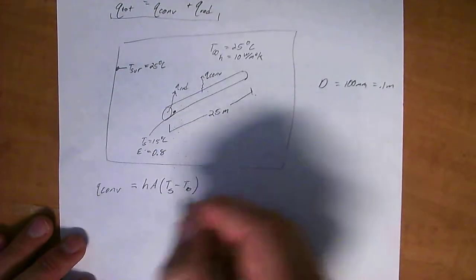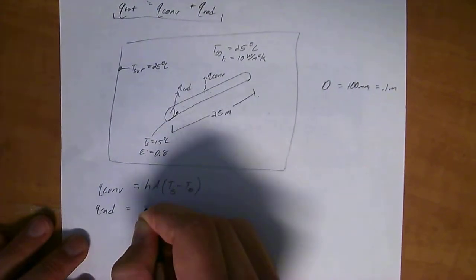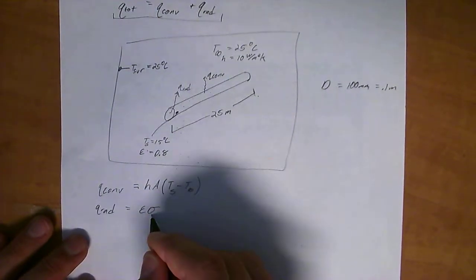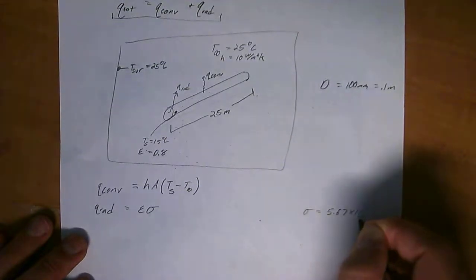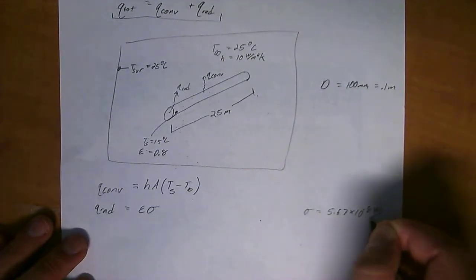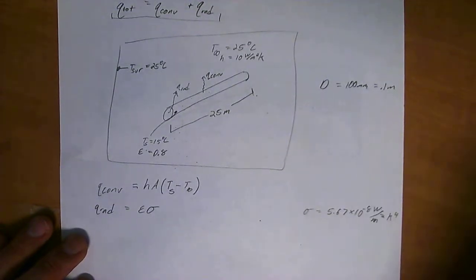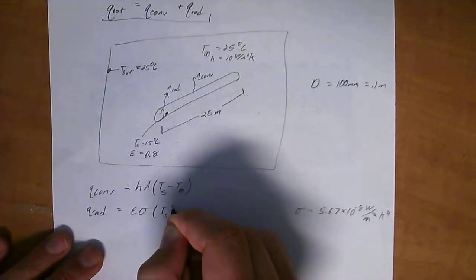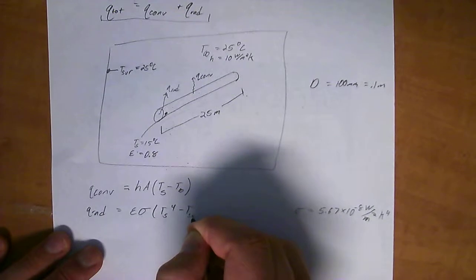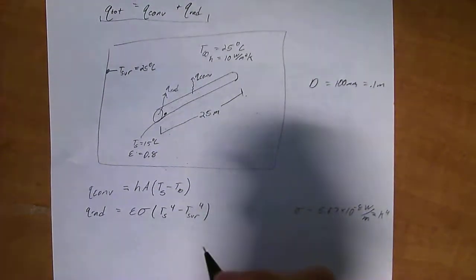And then we know that Q_rad, the equation for that, is the emissivity times the Stefan-Boltzmann constant, which is sigma, is equal to 5.67 times 10 to the negative 8 watts per meters squared kelvin to the fourth. Okay. So, that's that times T_s to the fourth minus T_surrounding to the fourth.